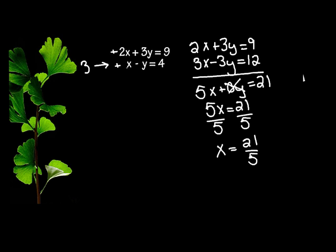Now to get y, I can either put it back into my first equation or my second equation. I'm going to put it into the second one just because I don't have to multiply by anything. So x again is 21 over 5.